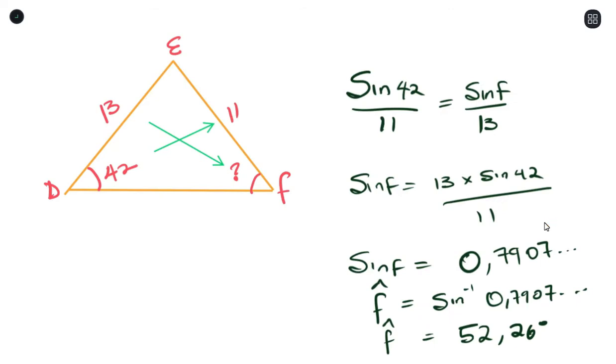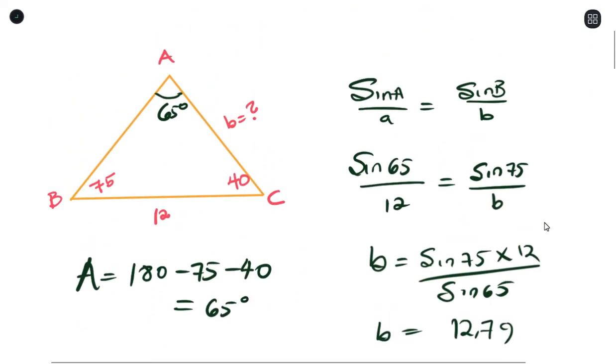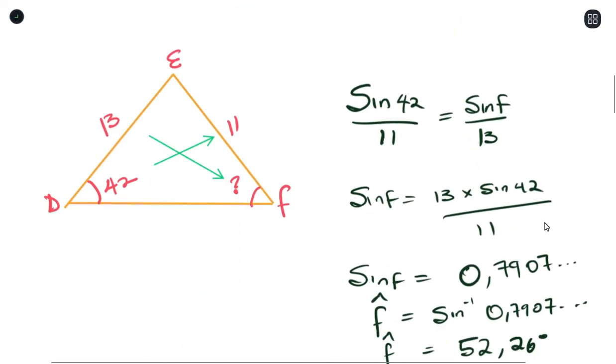The two ways in which we talked about to solve sine rule. The first one is having two angles and a side. And the second one is having two sides and an angle, where the angle and one of the sides has to be opposite to each other. Now with a better understanding of sine rule, let's move on to cosine rule.